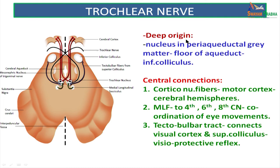The deep origin of the trochlear nerve: the nucleus is at the floor of the aqueduct at the inferior colliculus level. Its central connections are from both the cerebral cortex and also from the medial longitudinal fasciculus along with the 3rd, 6th and 8th cranial nerves for coordination of eye movements. It has connections with the tectobulbar tract, responsible for the visuoprotective reflex, which connects to the superior colliculus as well.